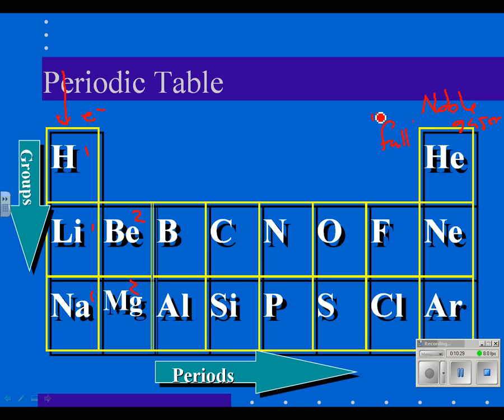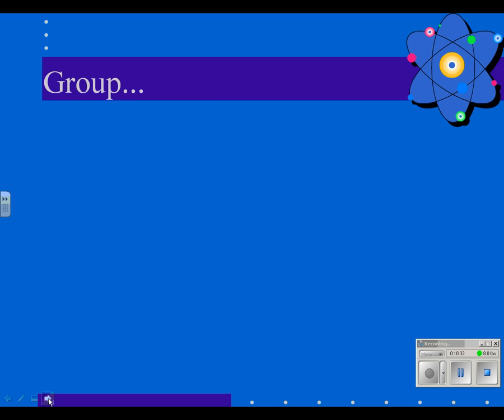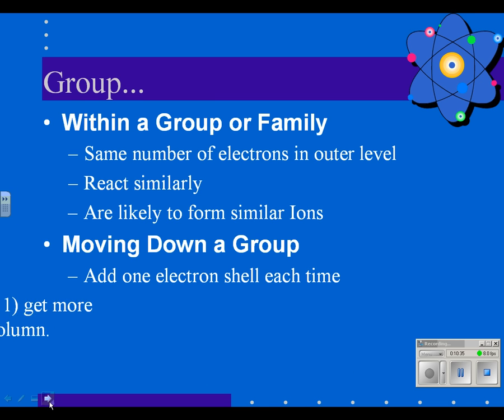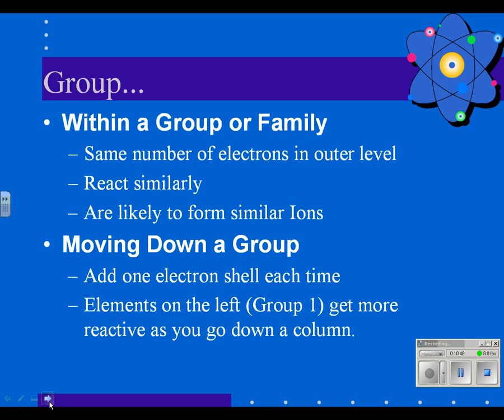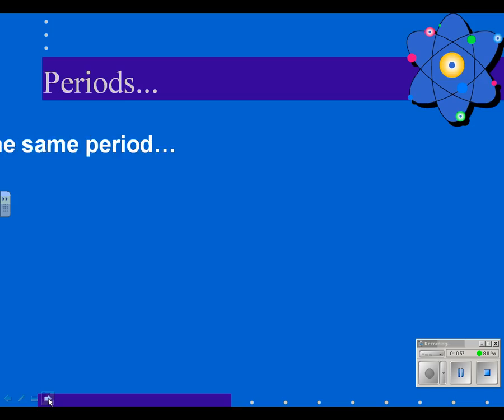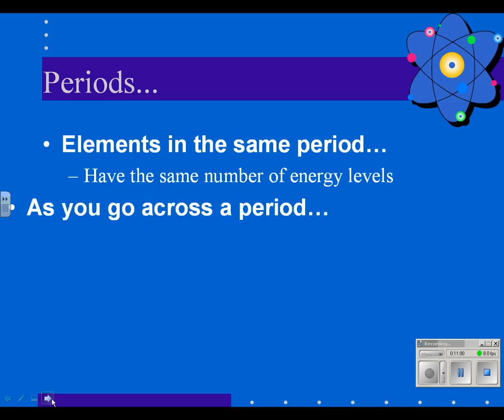So here's some review of that. Same number of electrons in the outer level. They react the same way. They're likely to form similar ions. And as you move down a group, you add one electron shell each time. Again, not important to us. Periods, elements on the farther right get less reactive as you go down a column. Periods, elements in the same period have the same number of energy levels. And as you go across, you increase the atomic number by one. And one electron is added to the outer shell each time, which makes them more or less reactive.